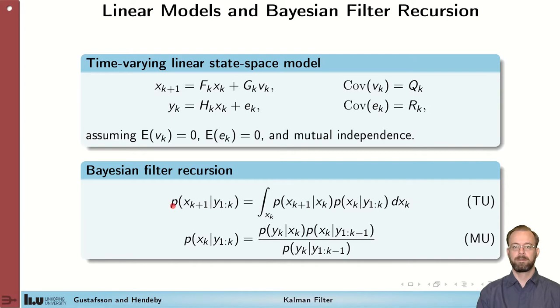It's the prediction step, which predicts what happens in the future given the current state and incorporates that in the estimate. And the measurement update, which incorporates observations of our object into the state information. We'll see how these can be used to derive the Kalman filter.